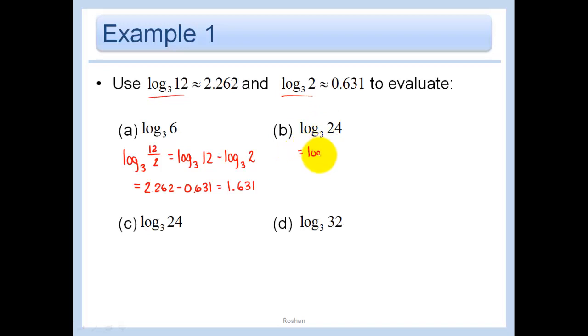log base 3 of 24 hopefully you're thinking to yourself ah 24 is 12 times 2 so we have log base 3 of 12 plus log base 3 of 2 in other words 2.262 plus 0.631 which gives us 2.893